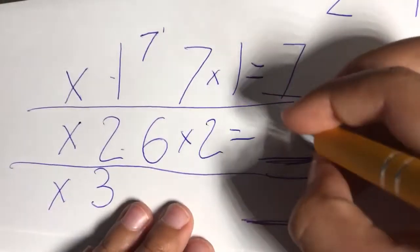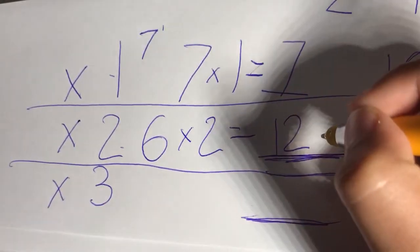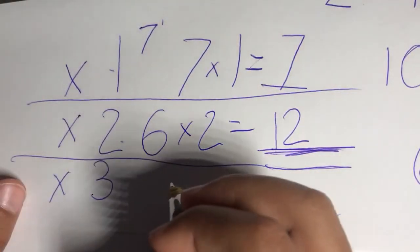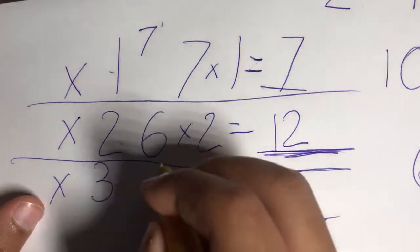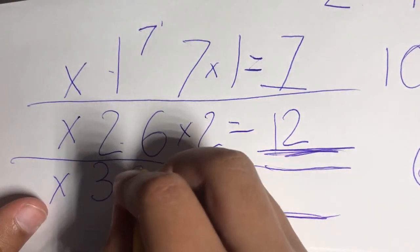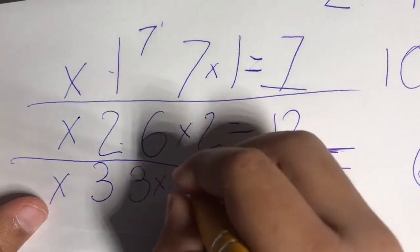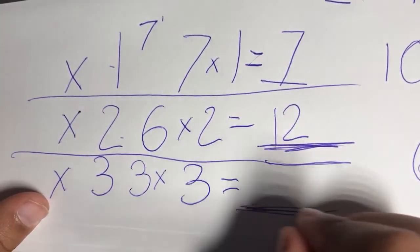Six times two is twelve. Then times three is a little bit harder. I'll give you an easier one for three. Three times three equals blank.